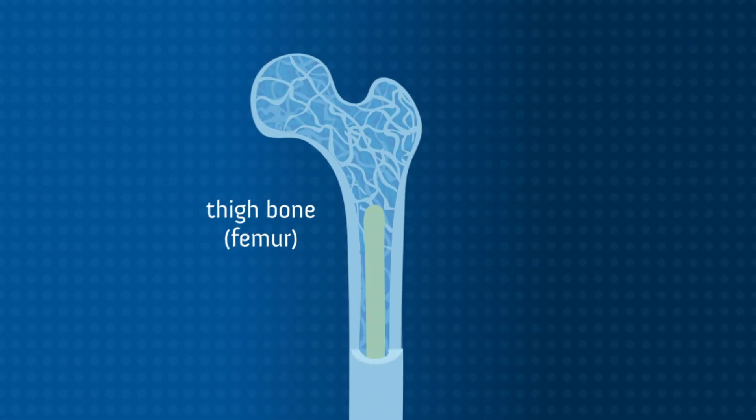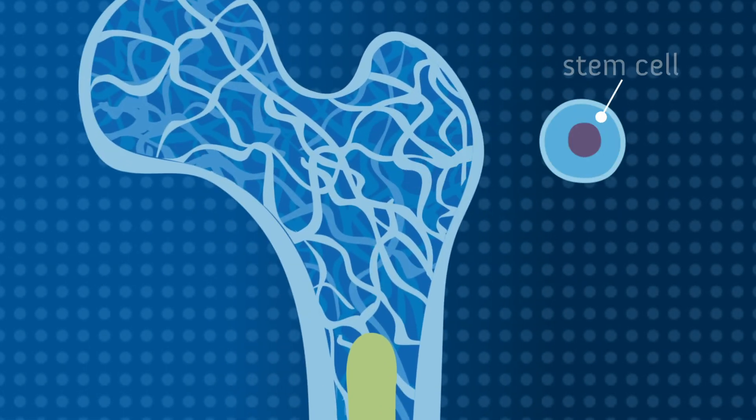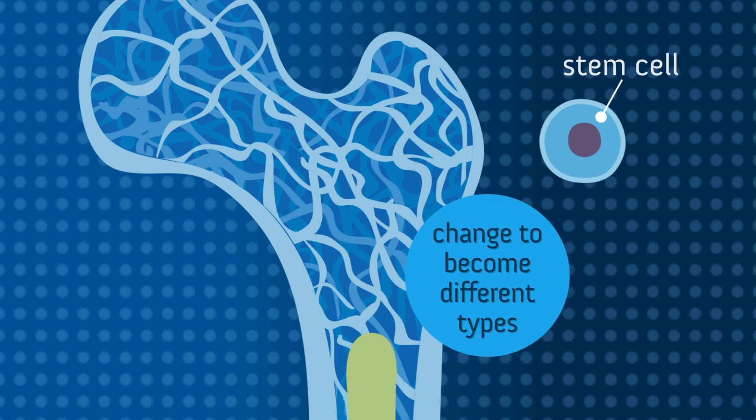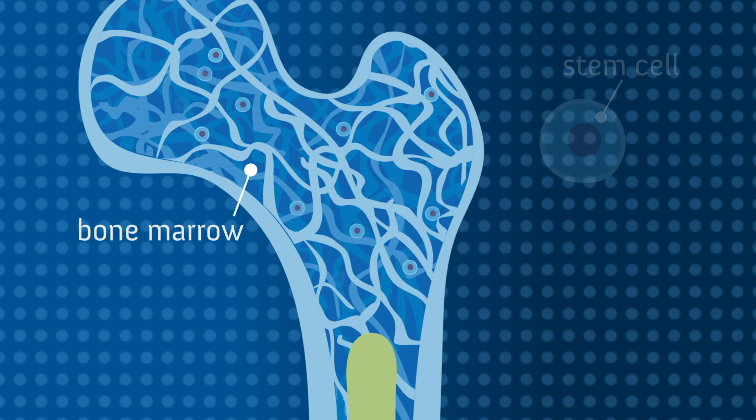In your body, there are many types of blood cells. Stem cells are immature cells that have the ability to become different types of blood cells. In the bone marrow, stem cells begin to replicate and become different types of healthy blood cells.